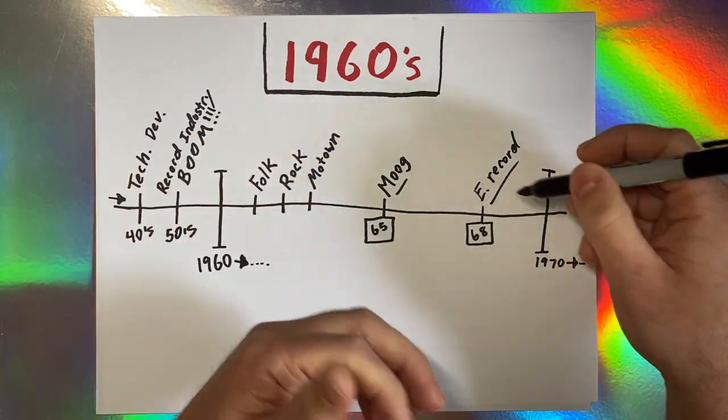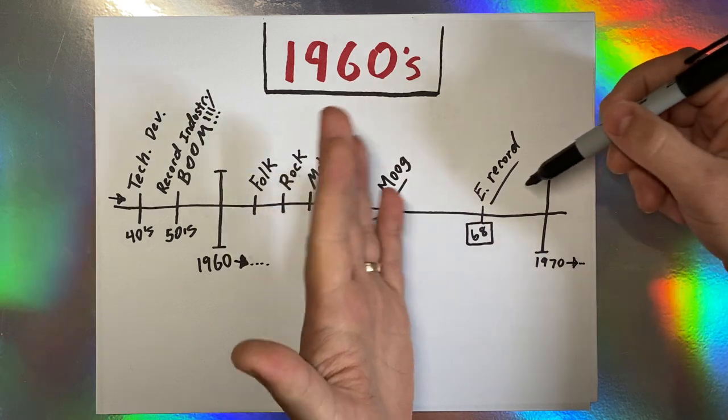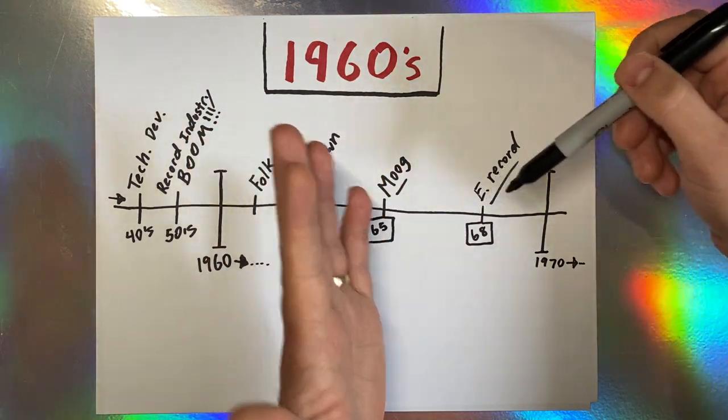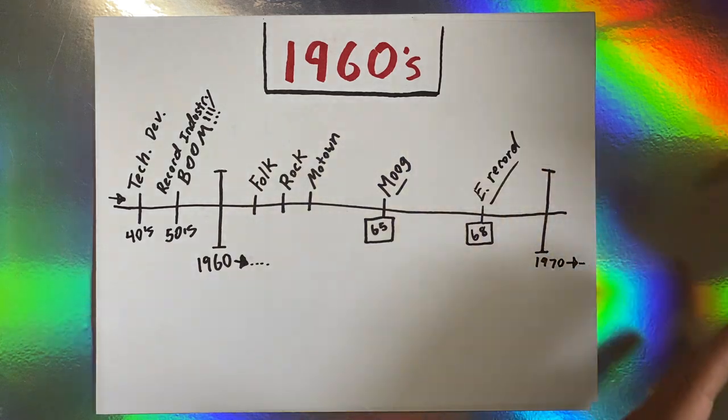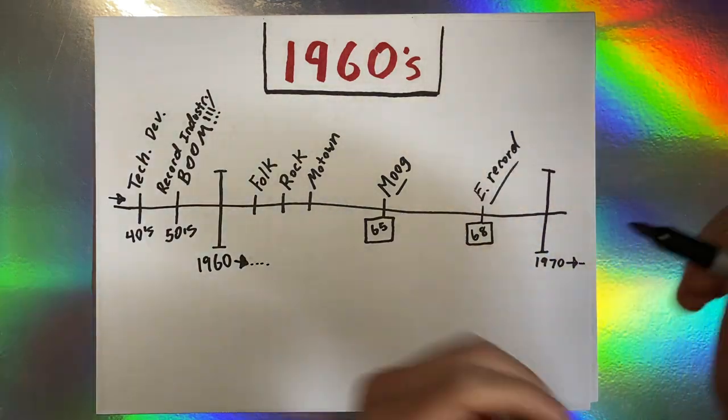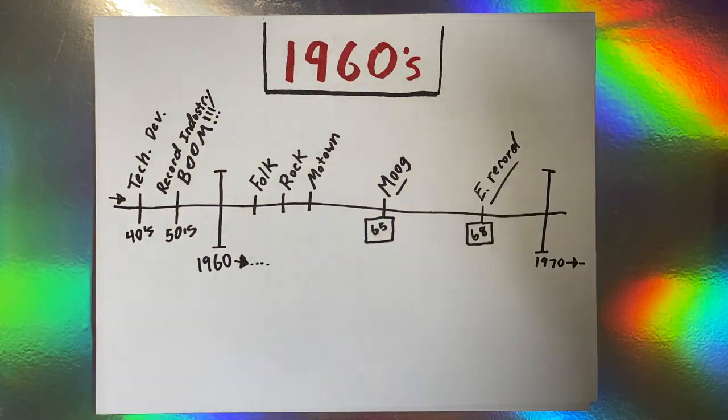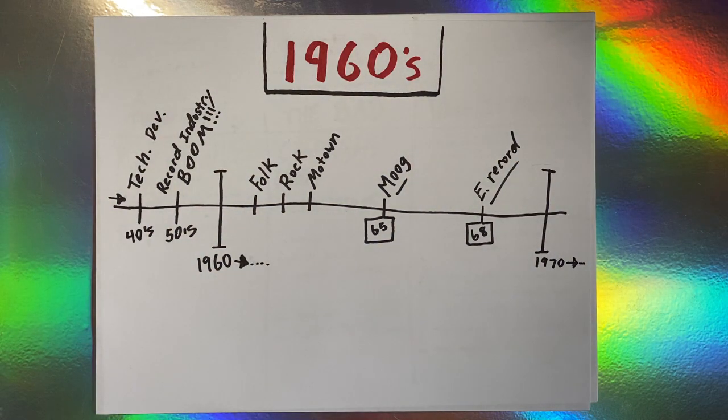When you get people having that in their house and it starts to become a common thing, then you have younger people who are going to see this and they're going to go, oh my gosh, this is possible now. They start to change their thinking so that in the 70s and the 80s, synthesizers become like a phenomenon. But we'll talk about that next week.